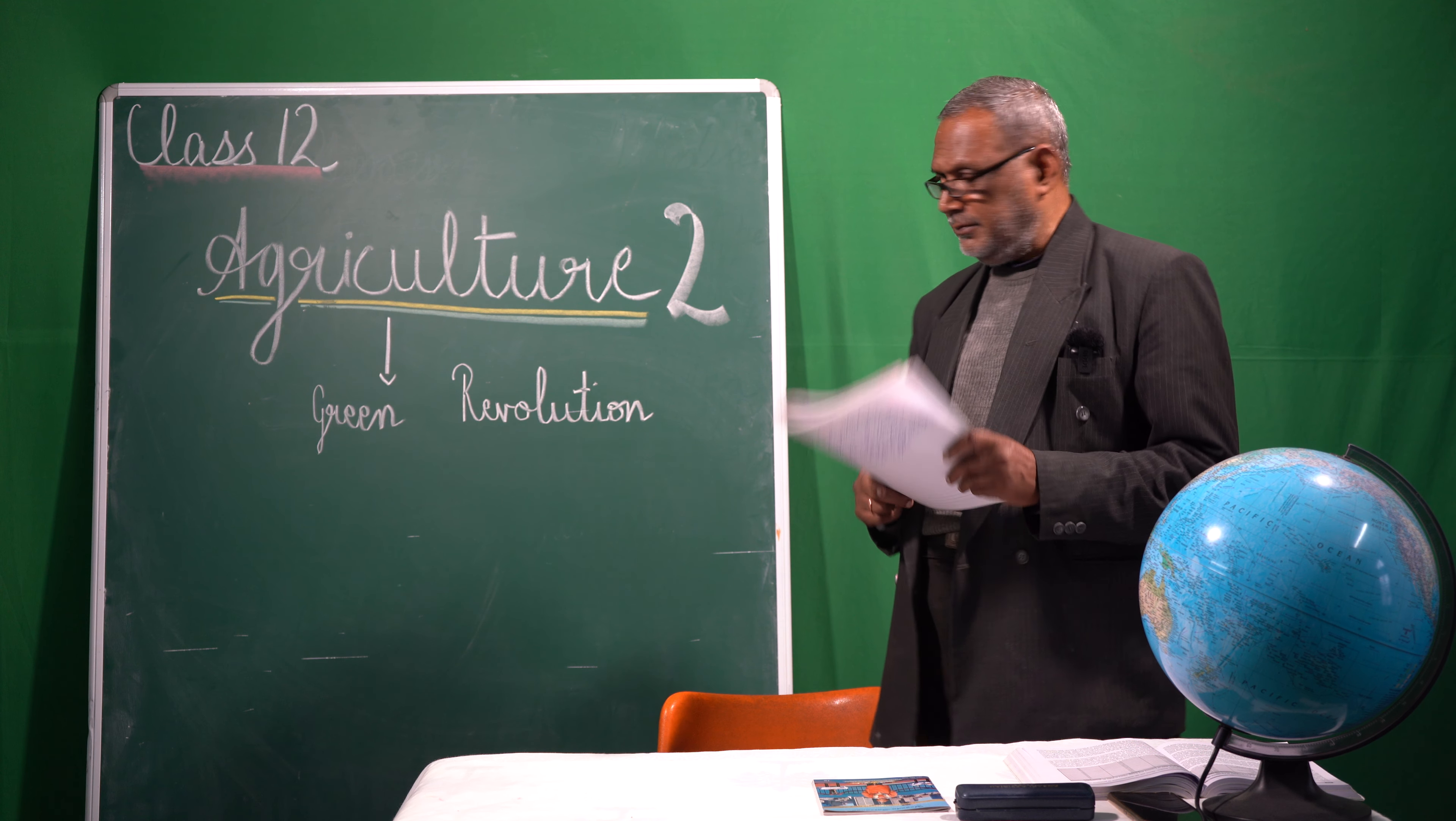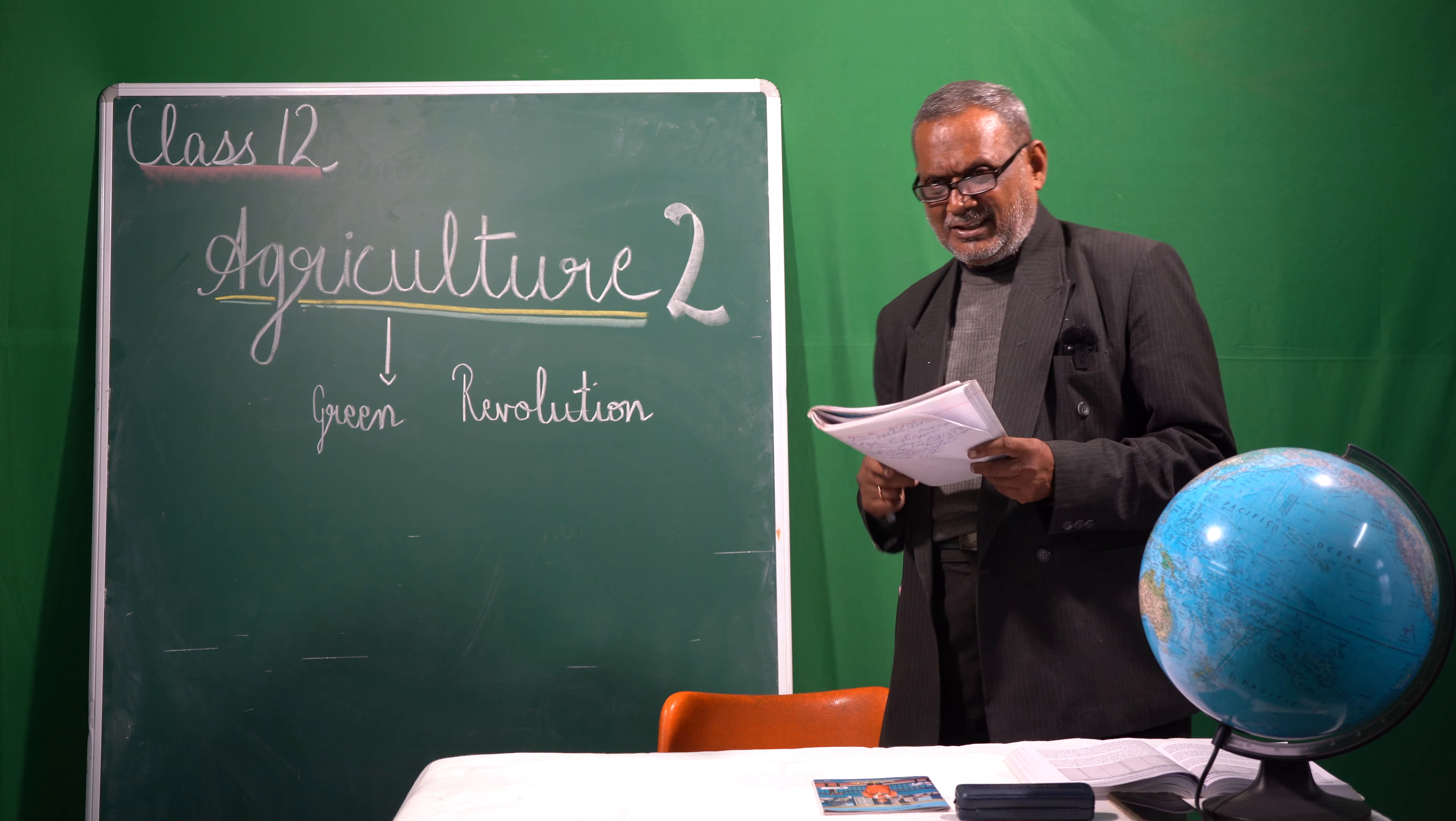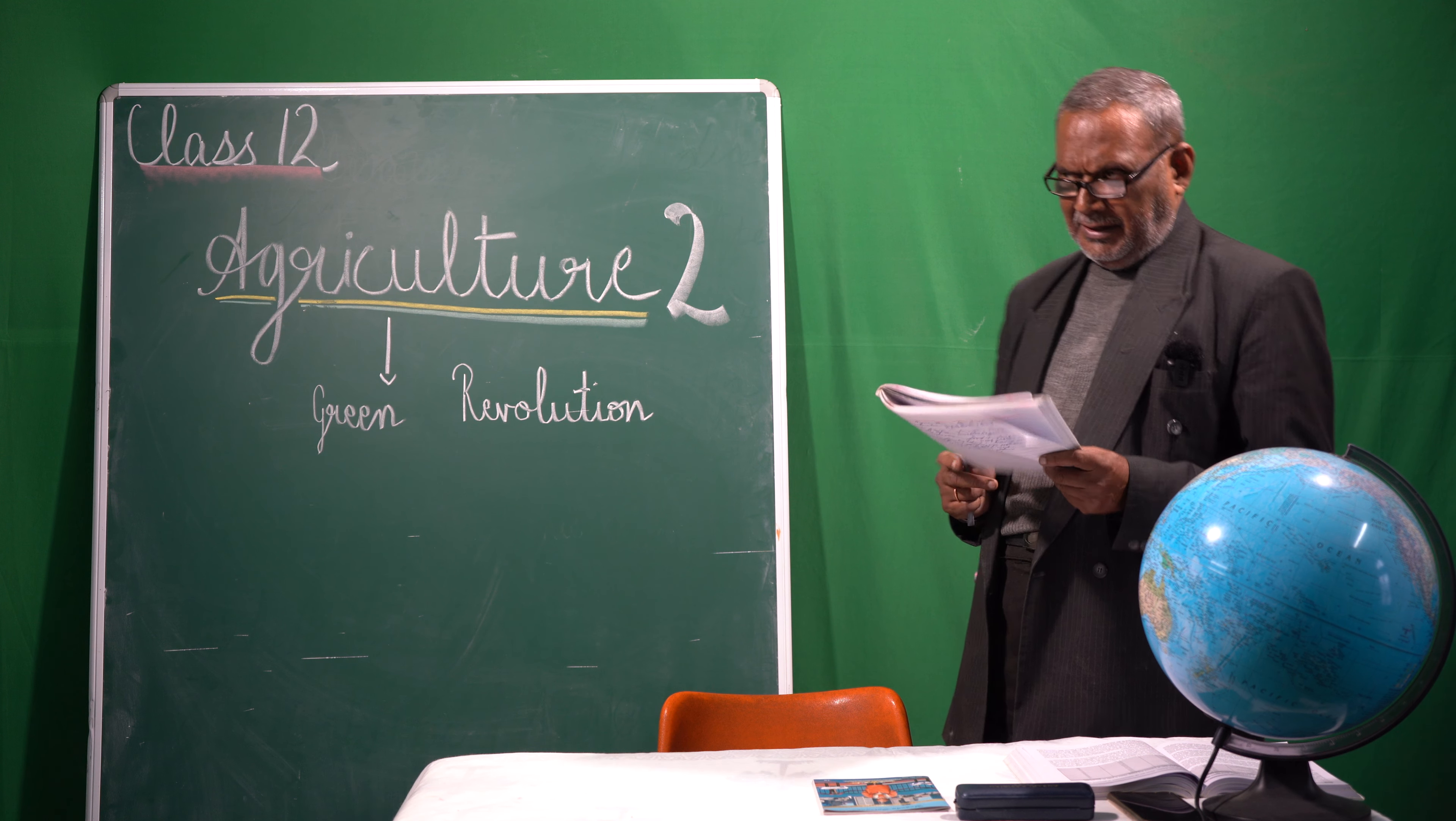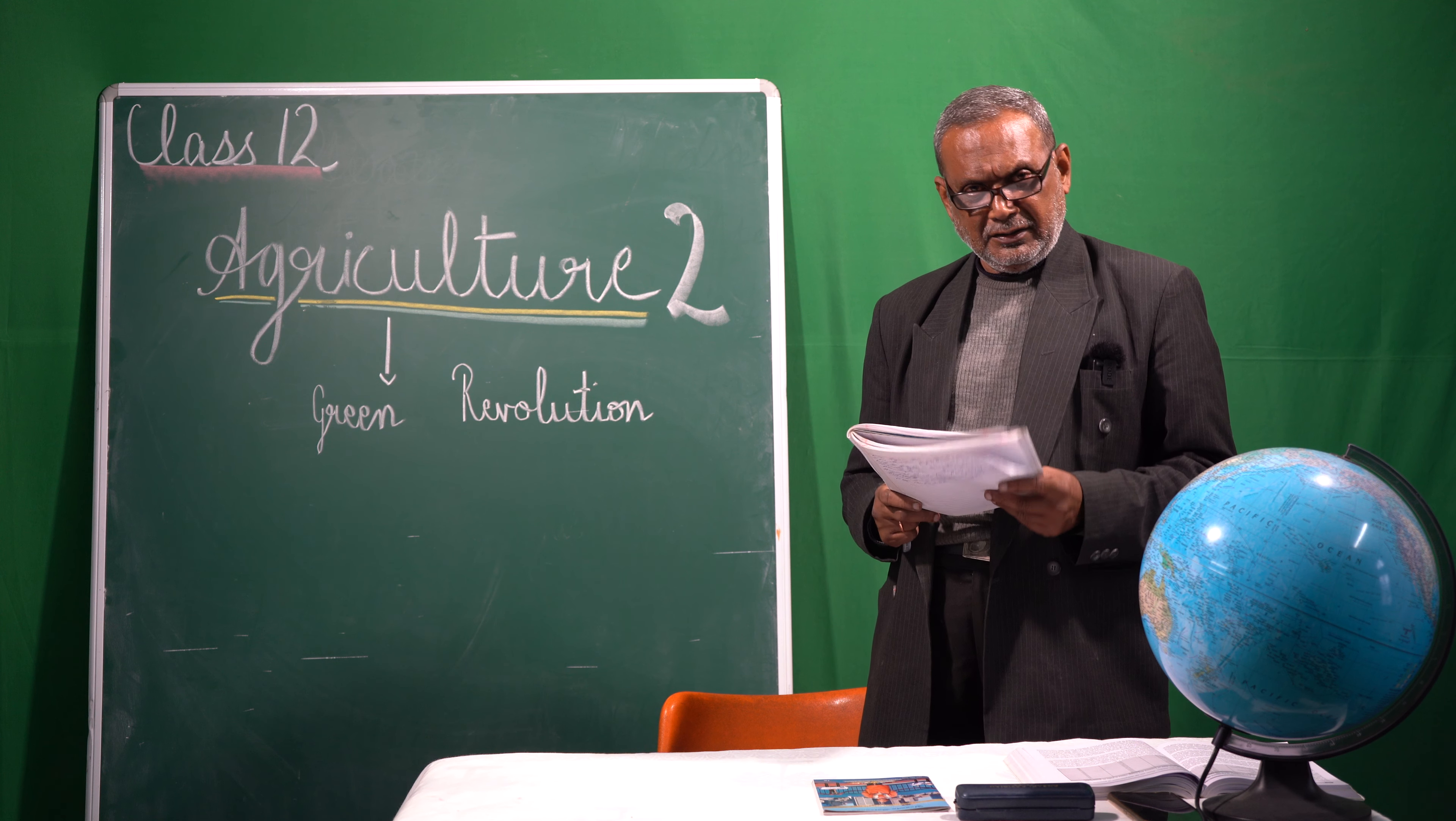Hello, good morning. I'm Ravi Shankar, teacher at St. Joseph's College, teaching Class 12 Geography. The topic is the Green Revolution in agriculture. This is the continuation of the previous video on the green revolution.